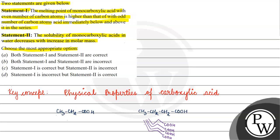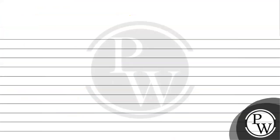Let's talk about Statement 2. Solubility of monocarboxylic acid in water decreases with increase in molar mass. As molar mass increases, solubility decreases. This statement is correct.